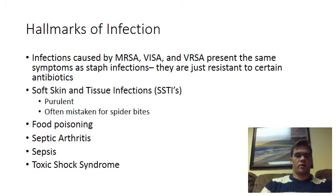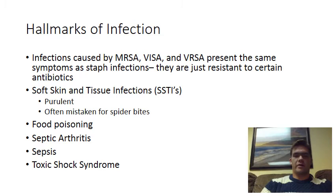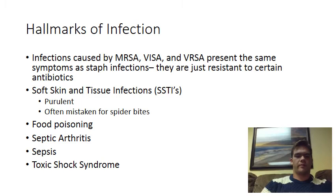The two big conditions that S. aureus infections can bring on if they're not treated are sepsis and toxic shock syndrome — and these can be deadly. In sepsis, the bacteria in the tissues moves to the bloodstream and can travel throughout the body, infecting the lungs, the heart, possibly the brain, and can also bring on septic shock, which is potentially deadly. Toxic shock syndrome is very similar except the bacteria itself doesn't move into the bloodstream — instead it secretes toxins into the bloodstream, and these toxins can bring on toxic shock, another condition similar to septic shock that can also be deadly.